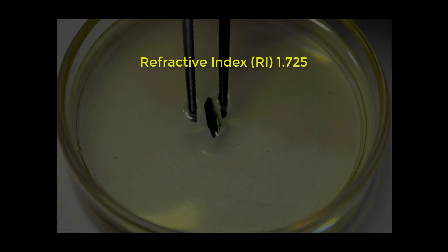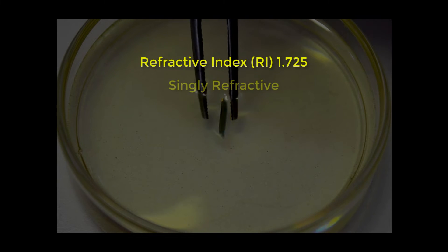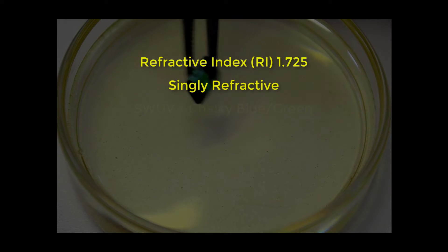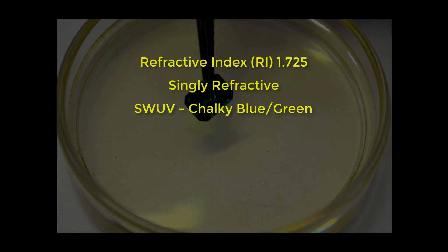With an RR of 1.725 for the top and bottom parts, singly refractive, and the way the stone fluoresces under shortwave ultraviolet, we can conclude that this stone is a composite stone with the top and bottom parts being synthetic spinel.